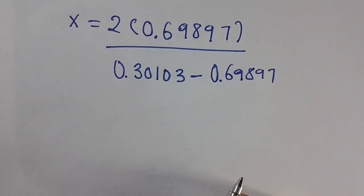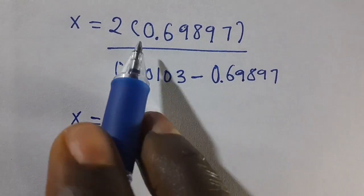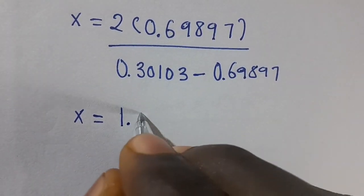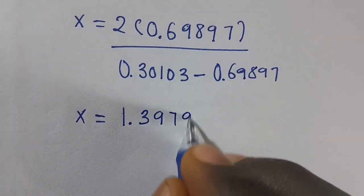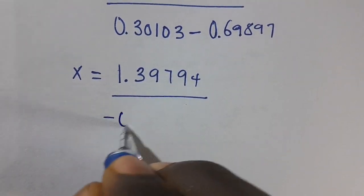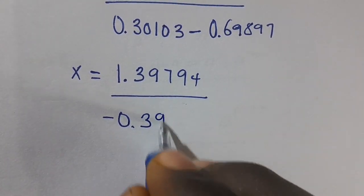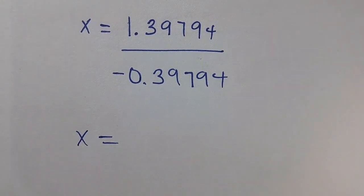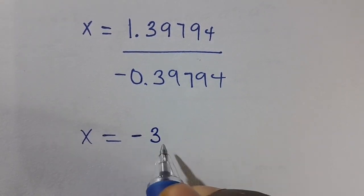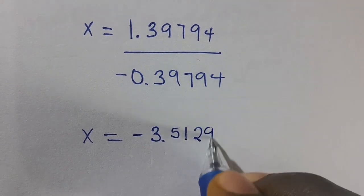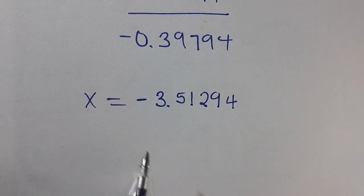So x equals 1.39794 divided by 0.30103 minus 0.69897, which gives 1.39794 divided by negative 0.39794. Dividing this out, we have x equals approximately negative 3.51294. This is the final answer for the value of x.